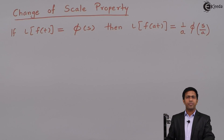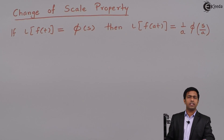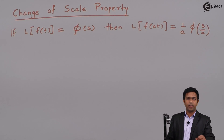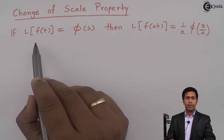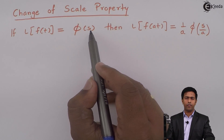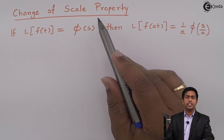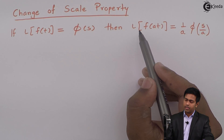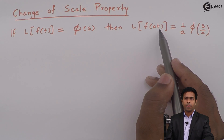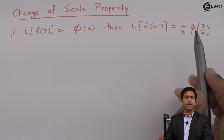Hello friends, today in this video we are going to derive the formula for the change of scale property. The change of scale property states that if Laplace of f(t) is equal to φ(s), then the Laplace of f(at) is equal to 1/a times φ(s/a).